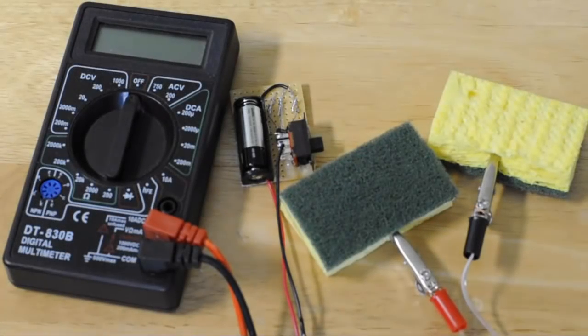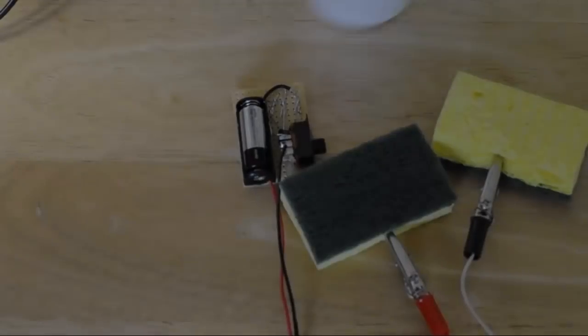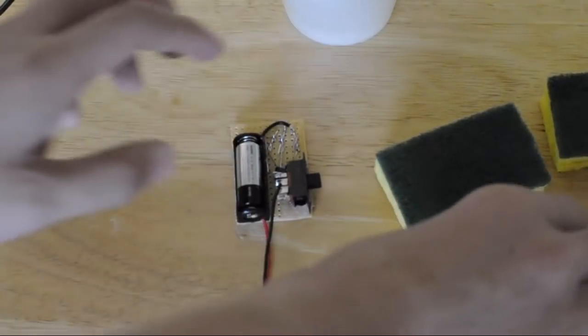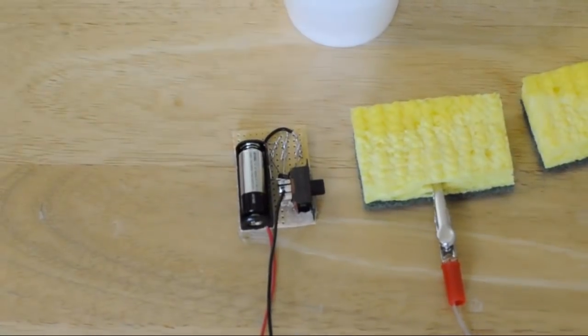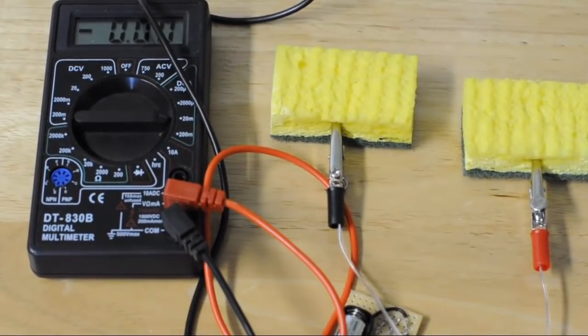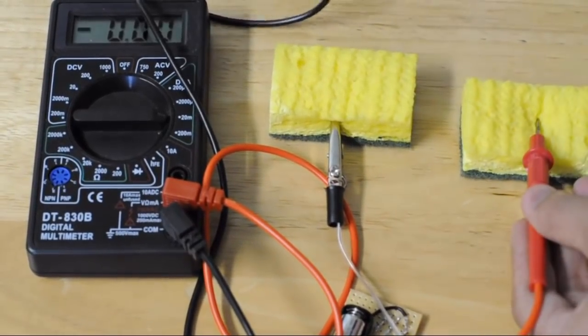Now it's time to measure the amount of electricity the TDCS device gives out so that we don't shock our brain with too much electricity. To accomplish this, we're going to use a multimeter. Take your sponges and dip them into a small amount of salt water. Make sure your device is turned on and connect the positive and negative of the multimeter to the positive and negative sponges. When we measured the amount of electricity given off, we set our multimeter to the milliamp setting. Now if you've built this device correctly, it should give off 1.5 milliamps.